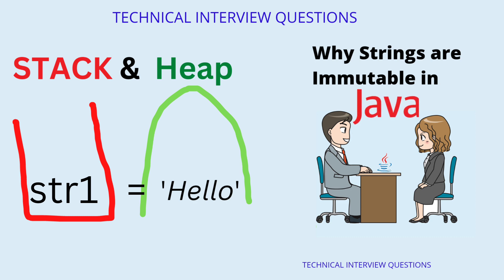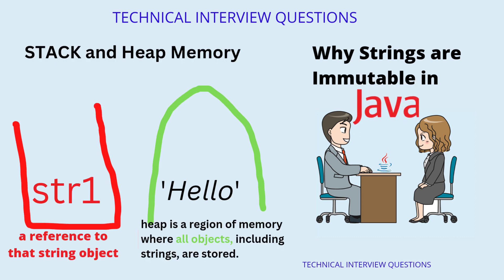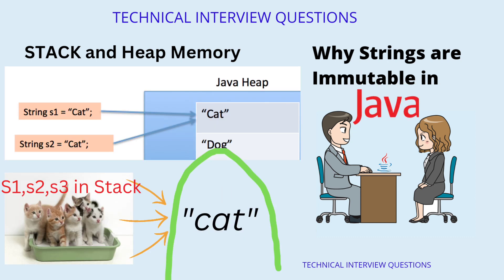Stack and heap memory: In Java, when a string object is created, it is stored in the heap memory. The heap is a region of memory where all objects, including strings, are stored. When a string is assigned to a variable, a reference to that string object is stored in the stack memory. Because strings are immutable, the JVM can safely reuse the same string object across multiple references, rather than creating a new object each time a string with the same value is used.